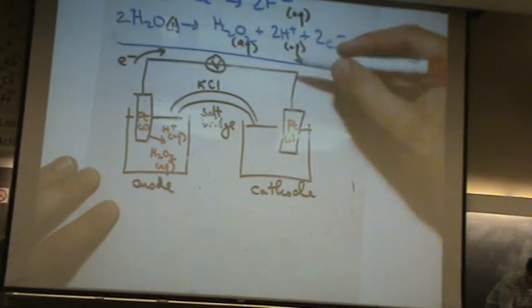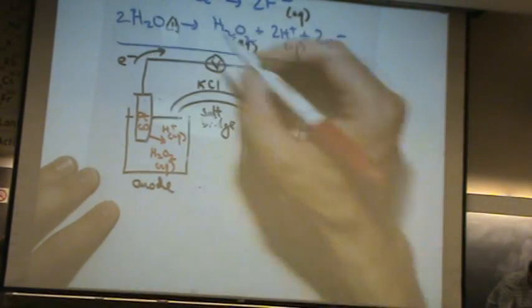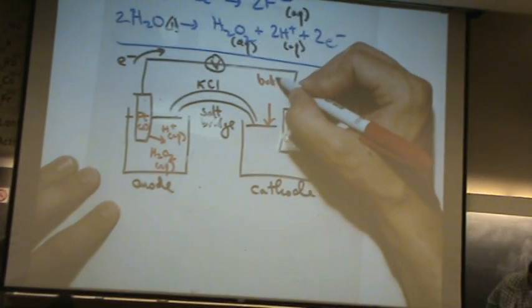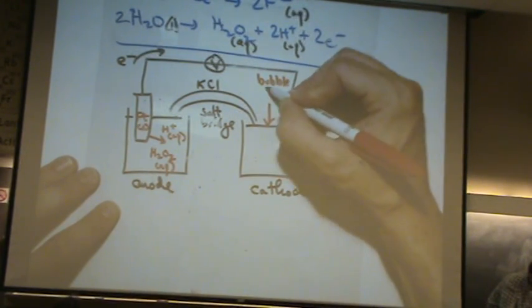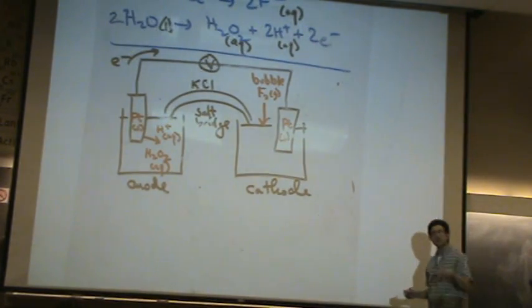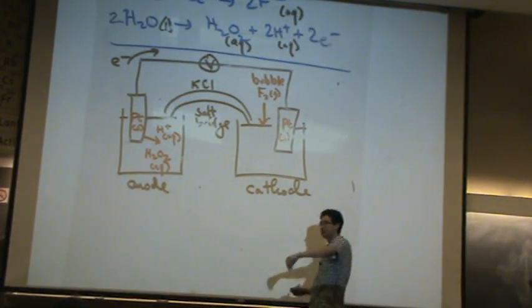so a reactant here is the electrons which are coming in and the F2 gas. So that means you have to bubble, since it's a gas, in order to get it in there, you have to bubble F2 gas in. Somehow you have a hose connected to a cylinder that bubbles into F2 gas.